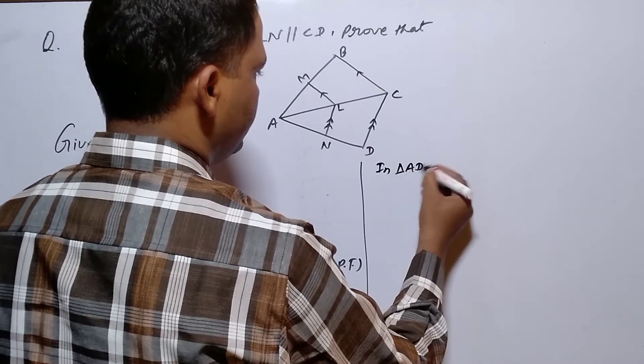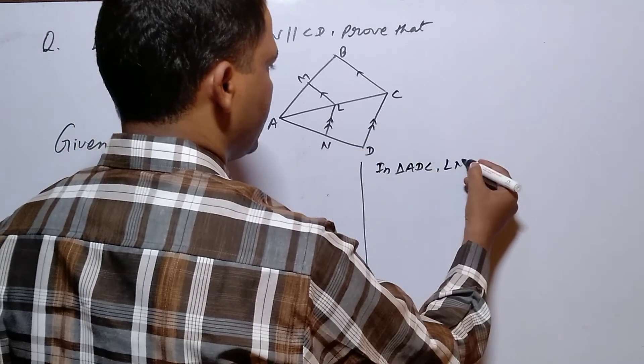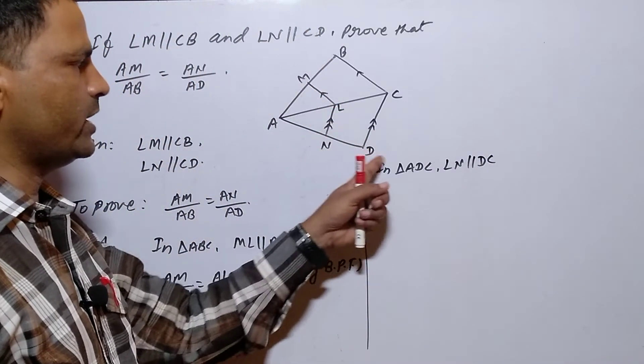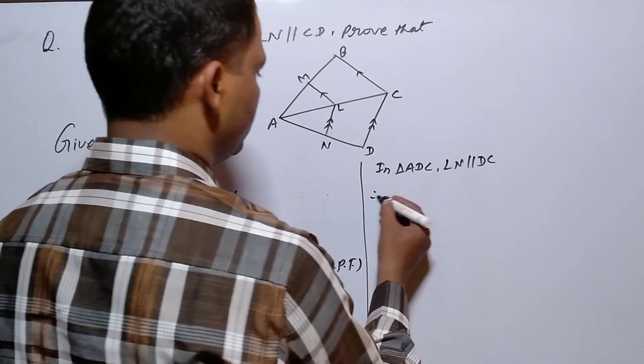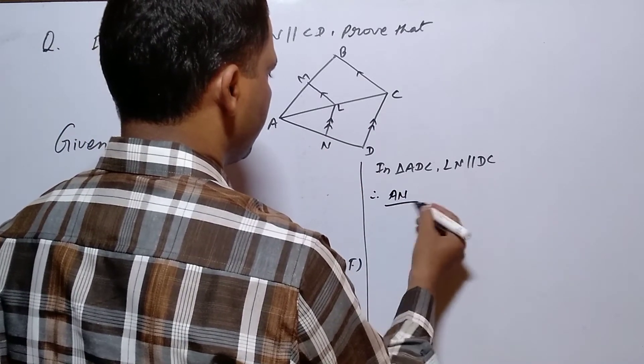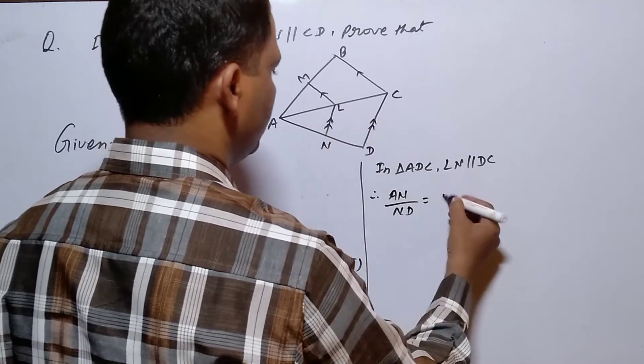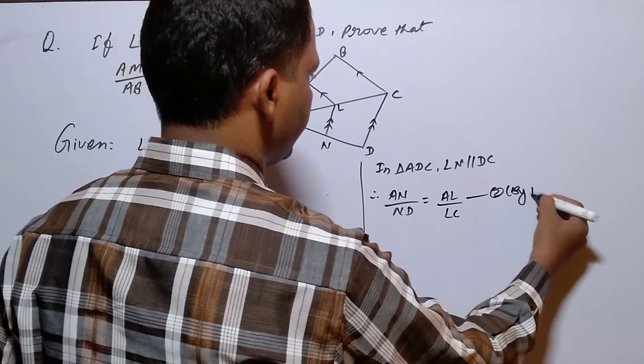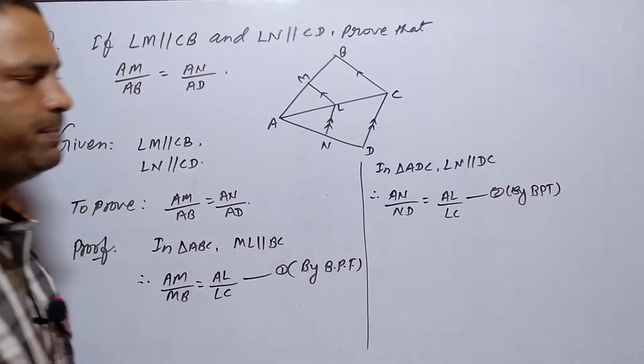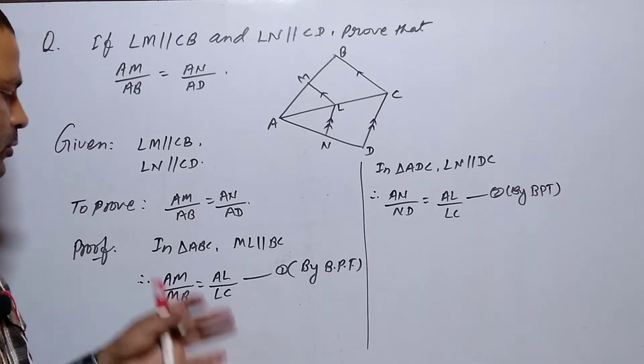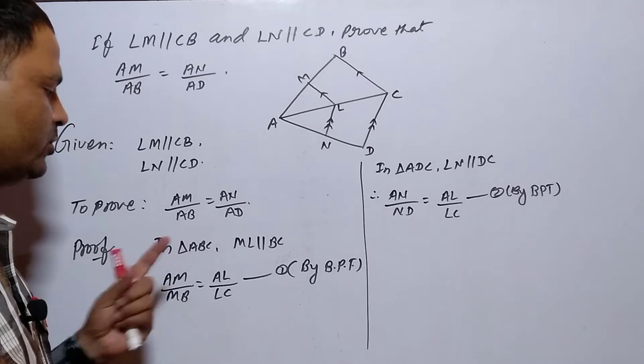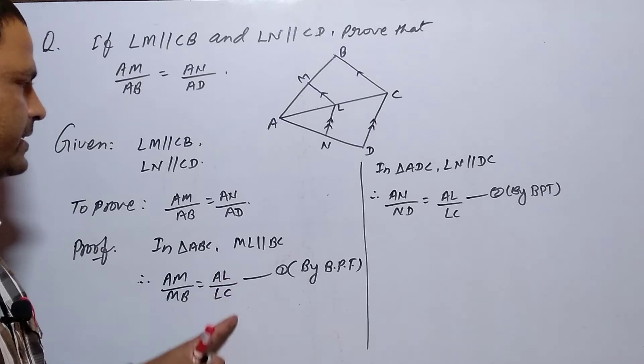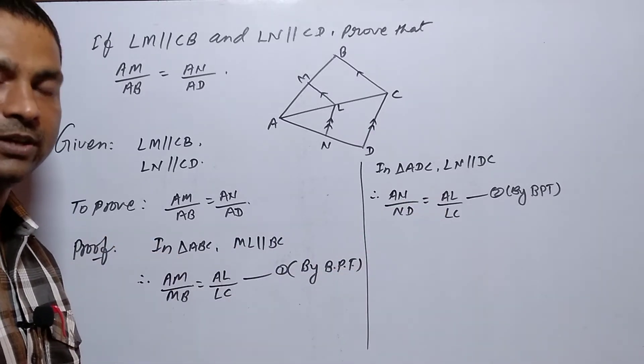Now, LN is parallel to DC. Therefore, AN by ND is equal to AL by LC. And this will be by BPT. This is equation 2.